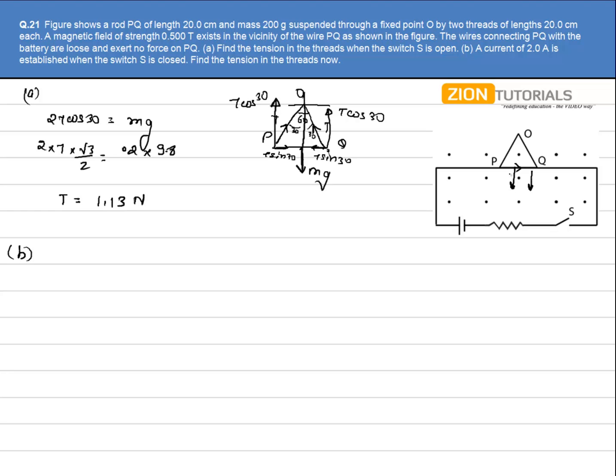That is given by BIL. So I can write 2T cos 30 is equal to Mg plus BIL.